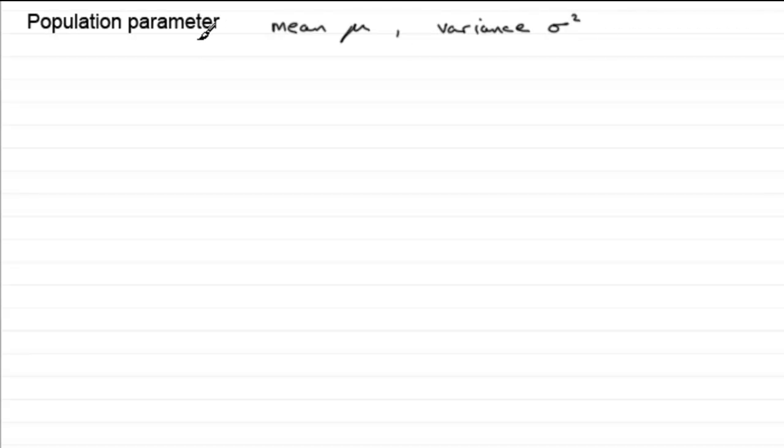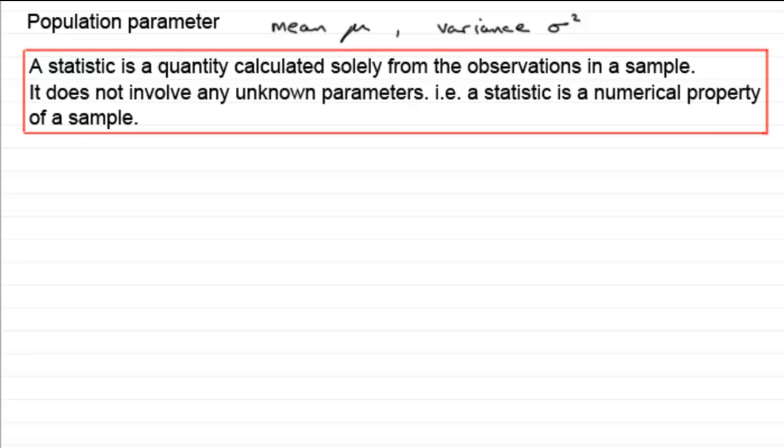Now, sometimes the population is very large, and measuring these quantities, the mean and the variance, becomes impossible. So what we have to do is estimate them, and we estimate them by taking a sample from the population. And we create a statistic. And the definition of a statistic is that it's a quantity calculated solely from the observations in a sample. It does not involve any unknown parameters. So a statistic is a numerical property of a sample.